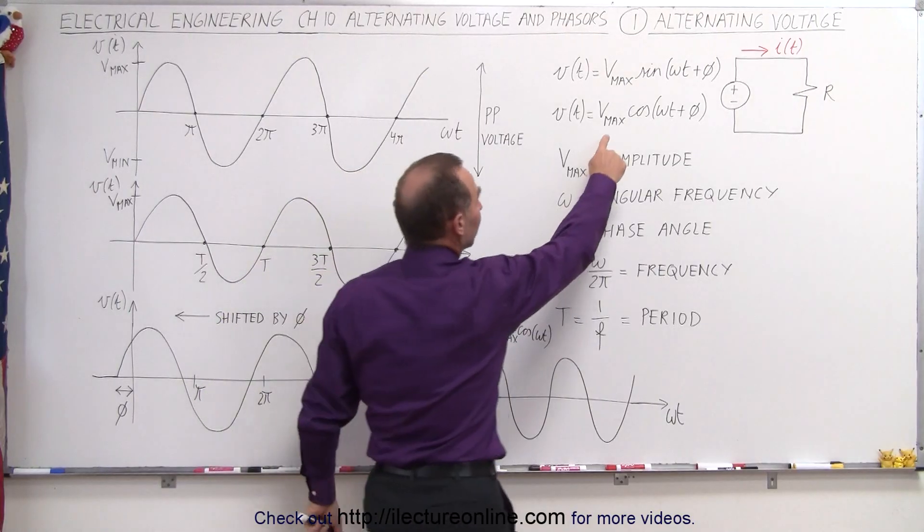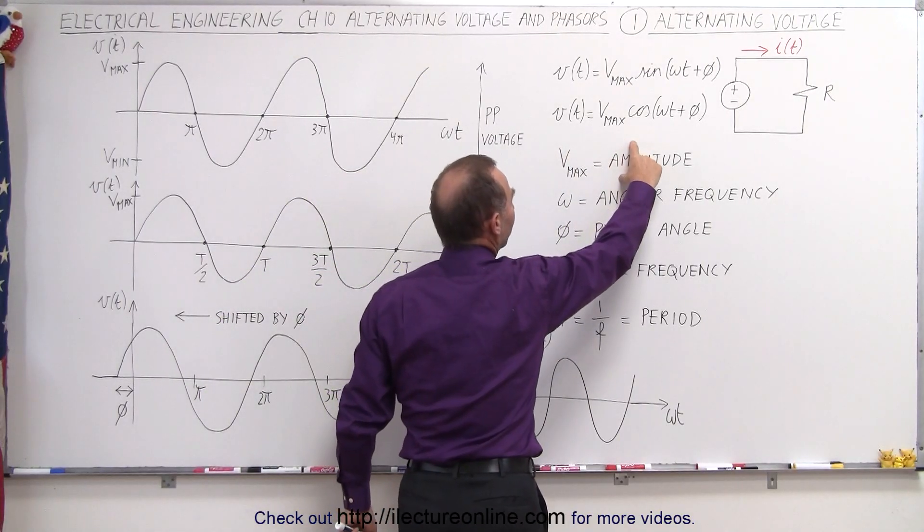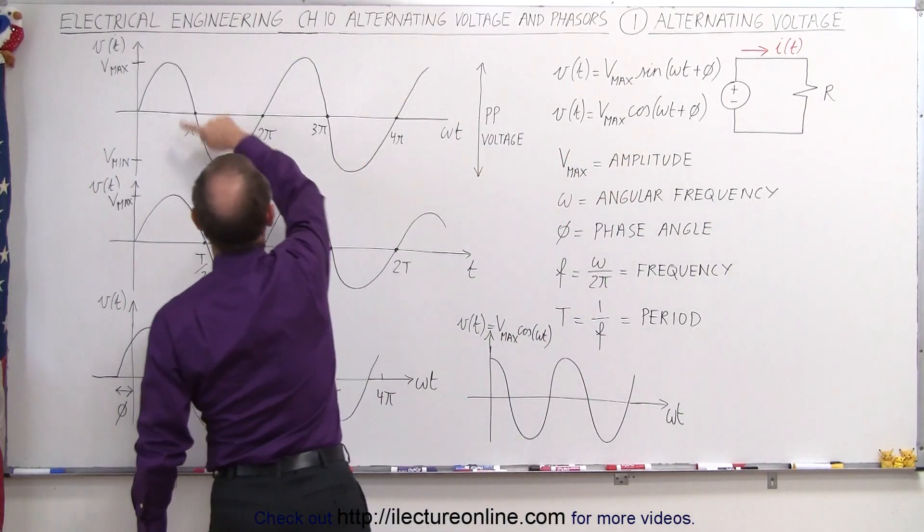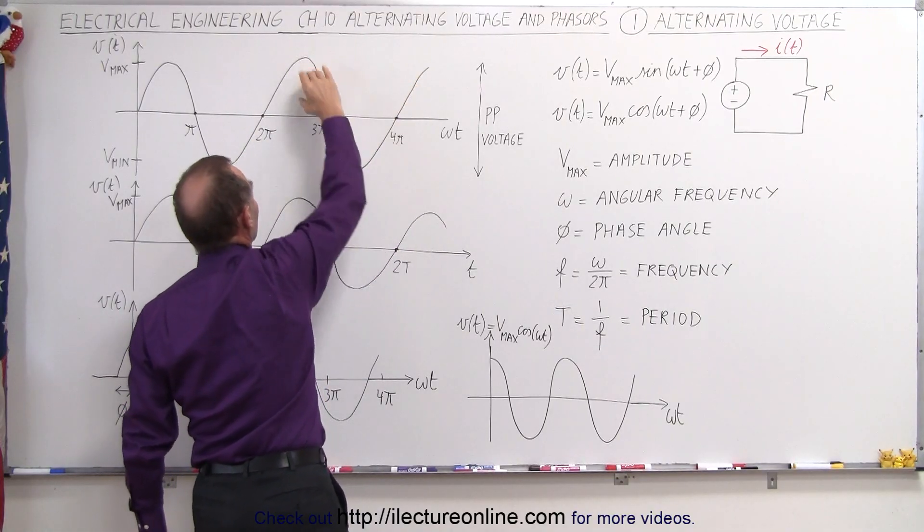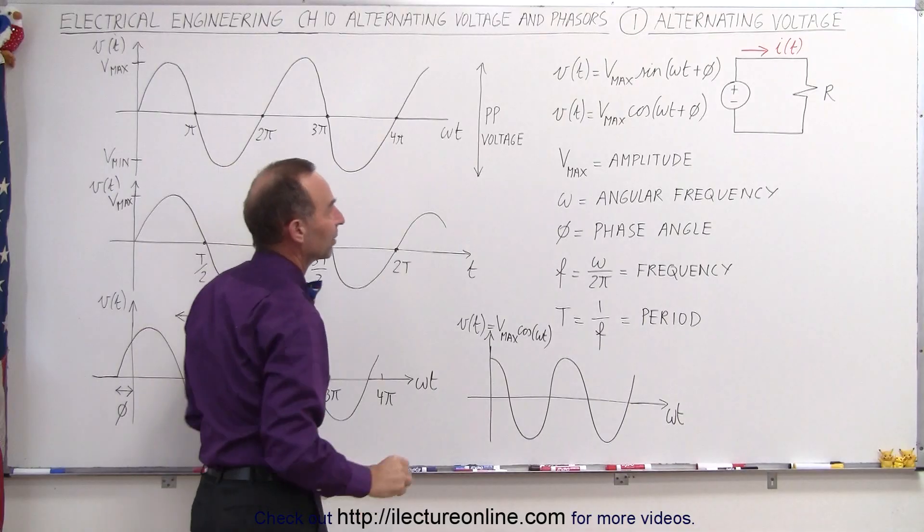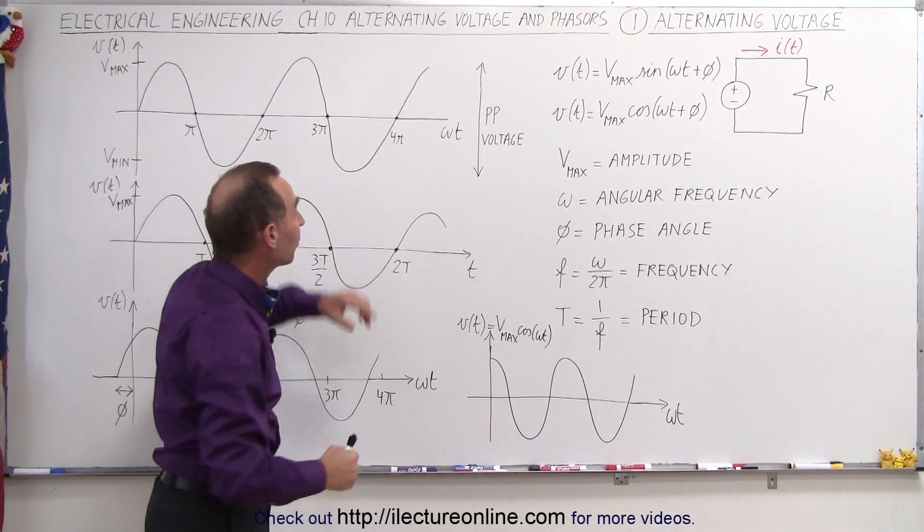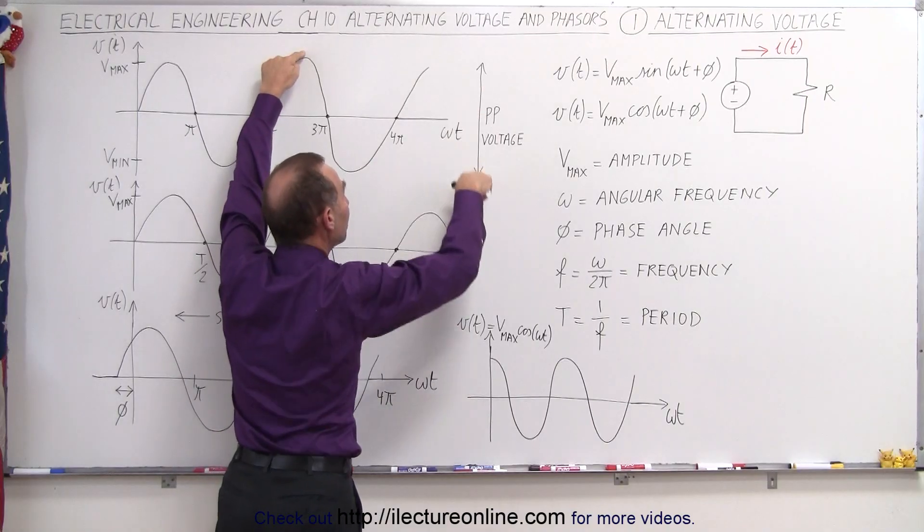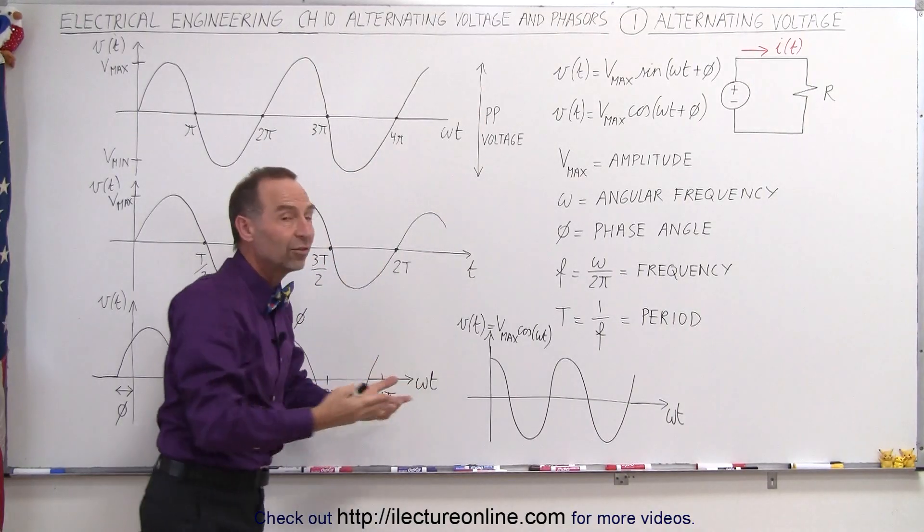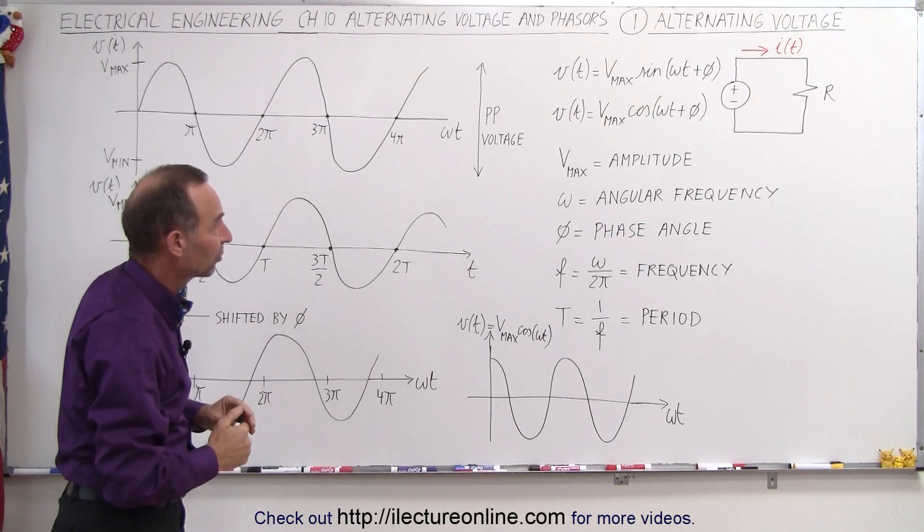So we look at this, and we realize that Vmax is the maximum amplitude of the voltage as it alternates between a positive and negative direction, from a maximum value to zero to negative maximum value. Sometimes we call the voltage from the top peak to the bottom peak the peak to peak voltage, which would be twice the maximum voltage from zero to the max.